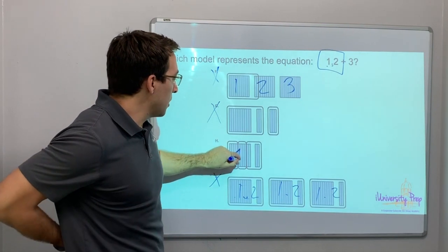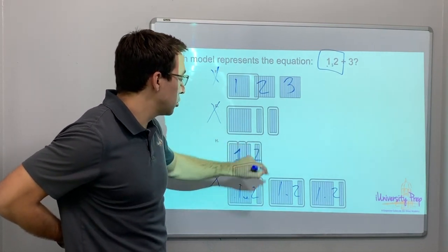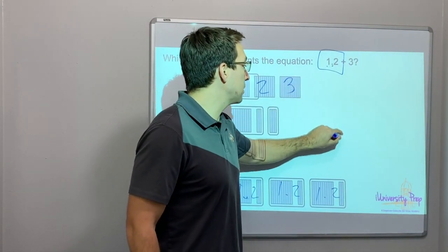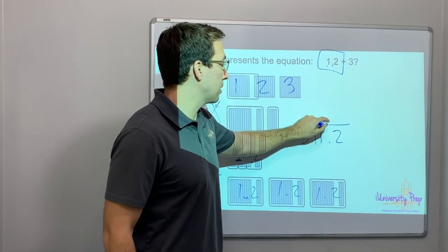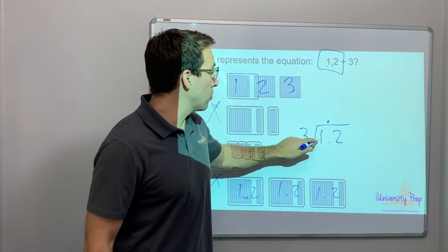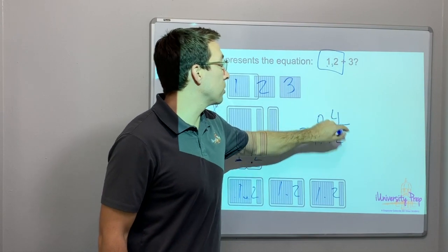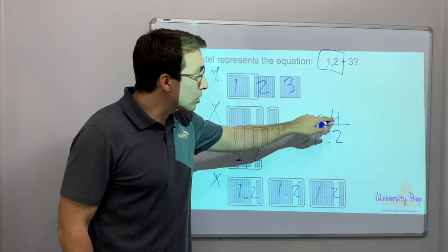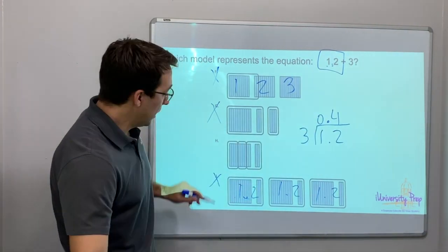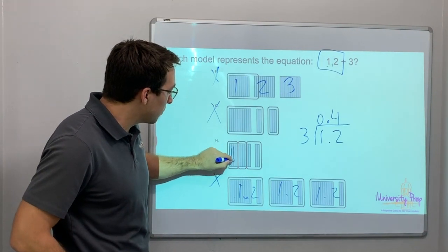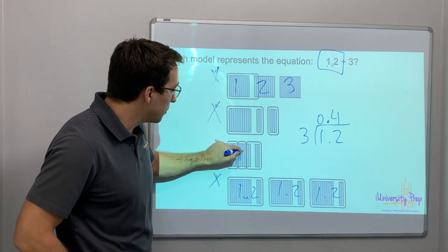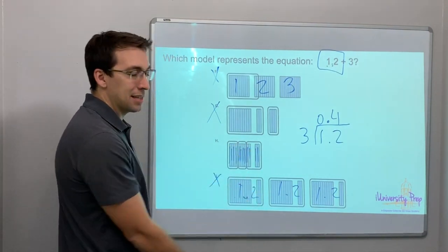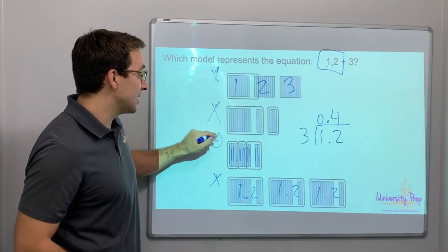Look, you have 1.2 divided by three. Watch this: 1.2 divided by three. First thing we do is raise our decimal. Three goes into one, zero times. Three goes into 12, four times. Look at this. Four tenths is the answer. In these squares, each group is 1, 2, 3, 4. One, two, three, four. One, two, three, four. The only difference is there's a space here. That is the answer. H is the answer. We're going to come back to that in a second.